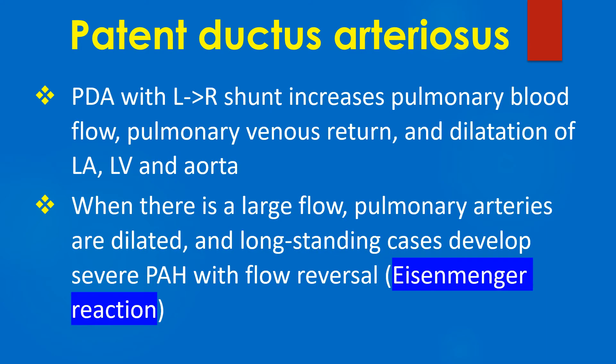PDA with left-to-right shunt increases pulmonary blood flow, pulmonary venous return, and causes dilatation of the left atrium, left ventricle, and aorta. When there is a large flow, the pulmonary arteries are dilated, and long-standing cases develop severe pulmonary hypertension with flow reversal, known as Eisenmenger reaction.